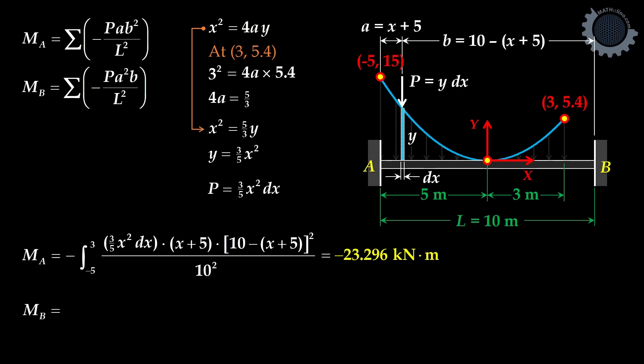Next, moment at B from the formula is negative P times A squared times B all over L squared, sum up from negative 5 to positive 3. That is the answer, moments at A and B.